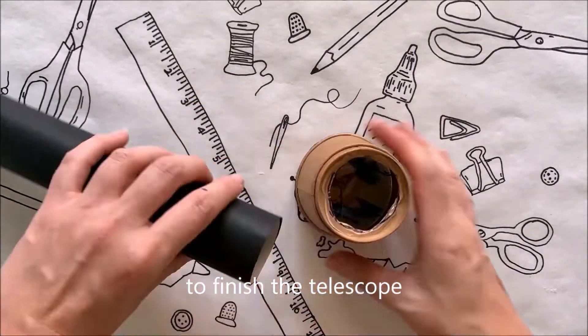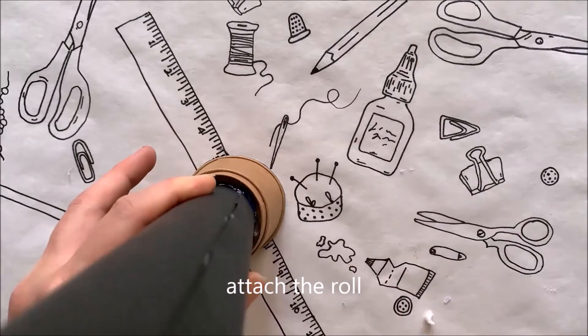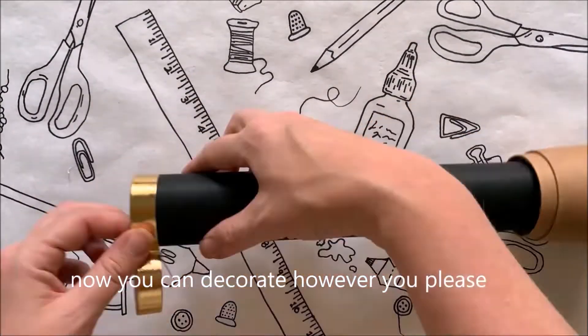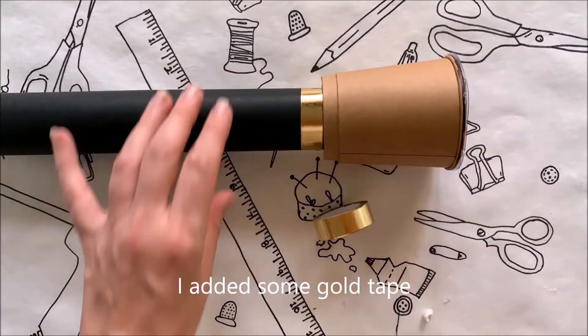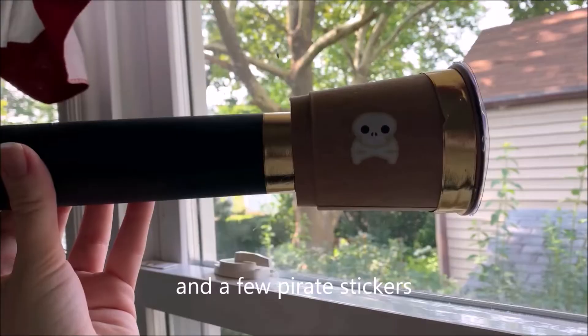To finish your telescope, add glue to the bottom of your cup and attach the roll. Now you can decorate however you please. I added some gold teeth and a few pirate stickers.